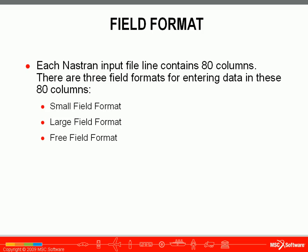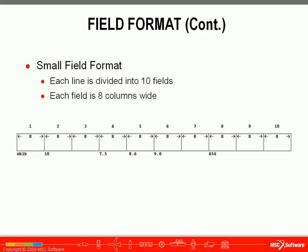Since each line in the input file contains 80 columns, there are three different field formats for entering data into those columns: the small field, large field, and free field formats. In the small field format, the 80 characters are divided into 10 fields, each 8 characters wide. Looking at this example, in field 4 we have a value of 7.5, field 5 has a value of 8.6, and so on.